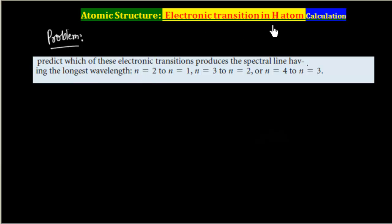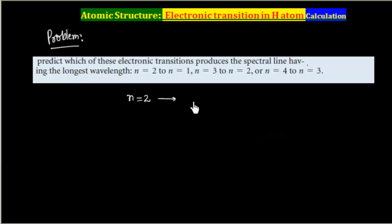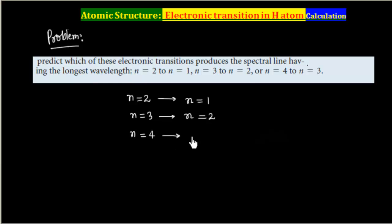This problem is related to electronic transition in a hydrogen atom. Let us read this problem and try yourself. We have to find the longest wavelength for the following transitions: n=2 to n=1, n=3 to n=2, and n=4 to n=3. We have to calculate the longest wavelength, that is lambda max.